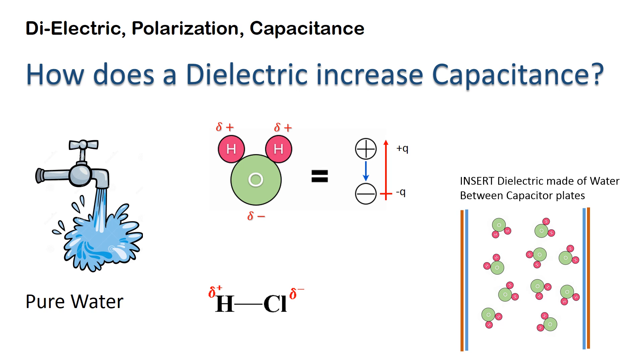Now when this dielectric is inserted between a parallel plate capacitor and the plates are not charged, these dipoles are randomly pointing in all directions. But this changes when the plates are charged.